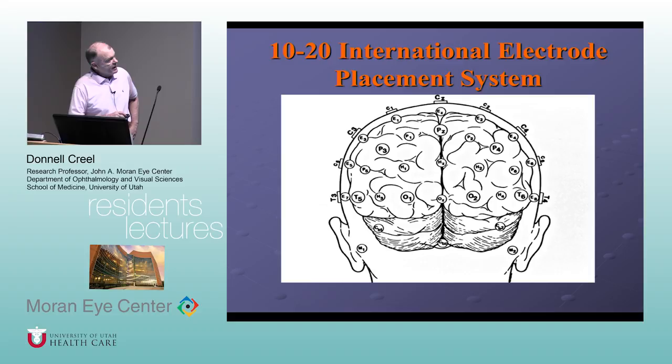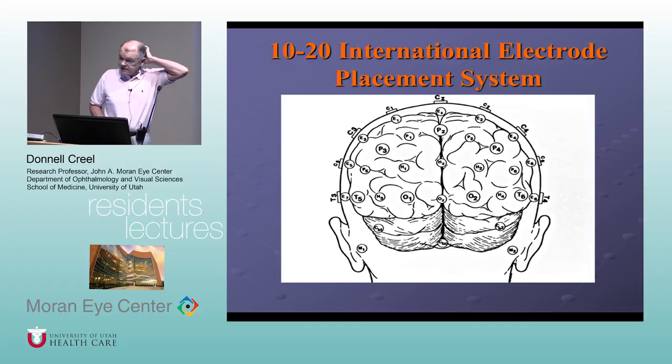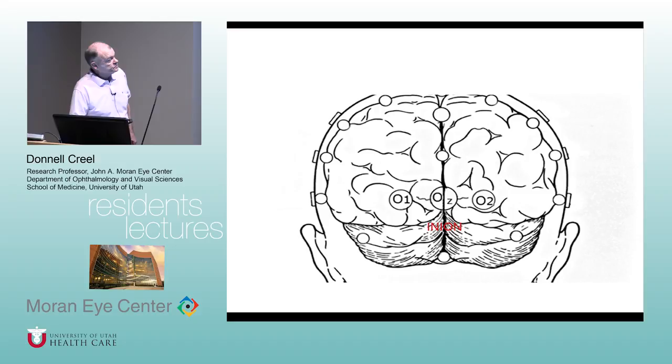The visual part of the brain is at the back of the head — everything at the back of the head is visual. The primary visual area that visually evoked potentials are recorded from is the central area: if you feel up the back of your head to your inion and go up about three or four centimeters, that's the center of the primary visual area, area 17 — O1, OZ, O2, inion.